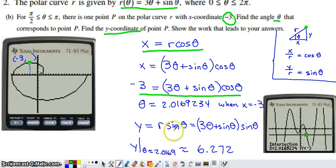I want to evaluate this at the θ value that makes x = -3. I stored the full θ value in the calculator and evaluated the expression: 3θ + sin θ in parentheses times sin θ. Then I rounded my answer for the y-coordinate to three digits of accuracy.